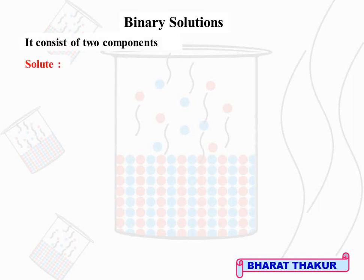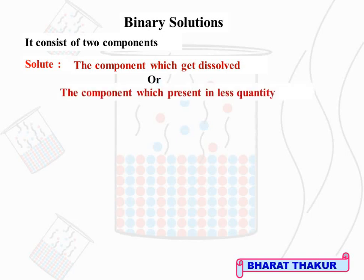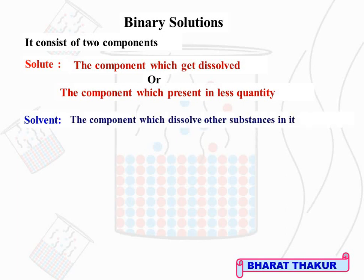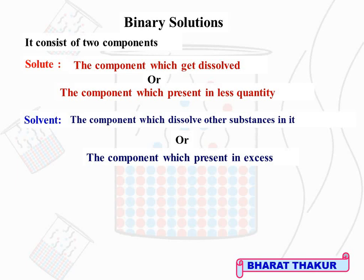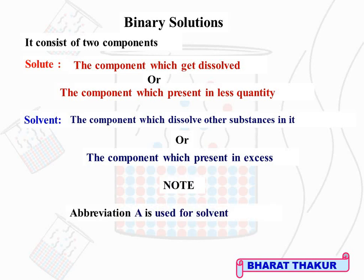A binary solution consists of two components. The first is called solute — the component which gets dissolved, or the component present in lesser quantity. The second component is the solvent — the component which dissolves other substances, or the component present in excess. In this chapter, we identify solute and solvent by their quantity. Abbreviation A is used for solvent and abbreviation B is used for solute in formulas and numericals.